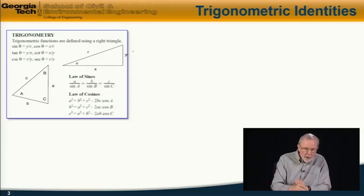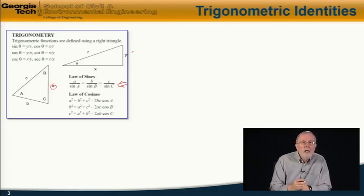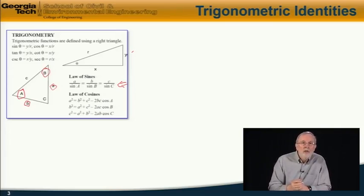For a more general triangle with sides a, b, and c, and interior angles a, b, and c opposite to those sides, we have the law of sines, which is a over sine a equals b over sine b equals c over sine c. In other words, the length of side a divided by the sine of its opposite angle equals the length of b divided by the sine of its opposite angle, etc.